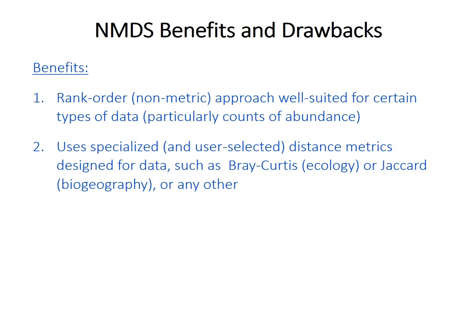NMDS has some clear benefits for certain types of data. The rank order, or non-metric, approach is very good when you wouldn't expect a linear relationship between the variables. This is particularly true when dealing with abundance counts, like counts of how many individual animals of a particular species you find at each place — which is what the method was really designed for. The ability to choose a distance measure specifically designed for your data is a big plus. For species counts you might use Bray-Curtis dissimilarity; for presence-absence data in biogeography you could use the Jaccard coefficient, or one of many others.